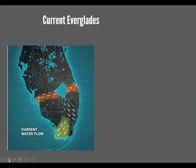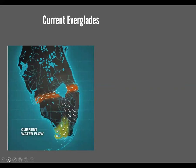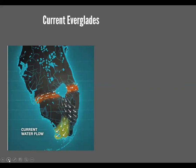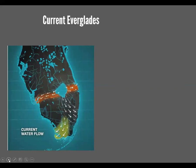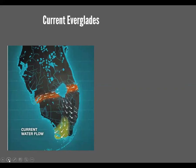Now humans came in and changed that. We decided to dike, dam, and dig canals to redirect the flow. We redirected the flow essentially out to the east and west coasts through the Caloosahatchee and St. Lucie estuary, limited the flow to the Everglades itself, and vastly diminished the flow to Florida Bay and the Gulf of Mexico.